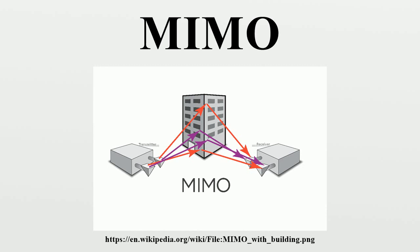Functions of MIMO: MIMO can be subdivided into three main categories — pre-coding, spatial multiplexing or SDM, and diversity coding. Pre-coding is multi-stream beamforming in the narrowest definition; more generally, it is considered to be all spatial processing that occurs at the transmitter. In beamforming, the same signal is emitted from each of the transmit antennas with appropriate phase and gain weighting such that the signal power is maximized at the receiver input. The benefits of beamforming are to increase the received signal gain by making signals emitted from different antennas add up constructively, and to reduce the multipath fading effect.